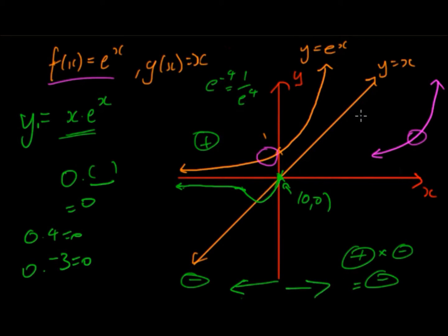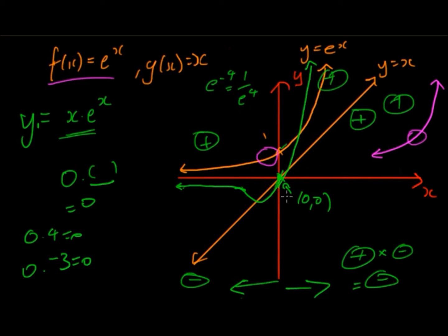Looking at the right side, we see there's a positive and a positive, so the result is going to be positive as well — positive times positive is positive. Starting from zero, the graph is going to go up very quickly, because a large positive number times another large positive number gives us a large positive number. The reason this product function is greater than y = e to the x is because y = x is greater than 0 for most of it. Once x is greater than 1, y = x is greater than 1, so e to the x times that value is obviously going to be a greater number.